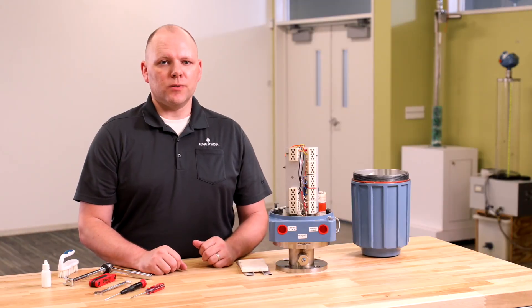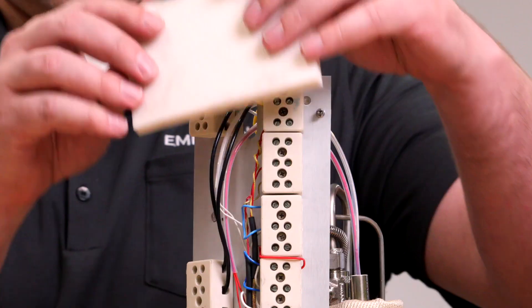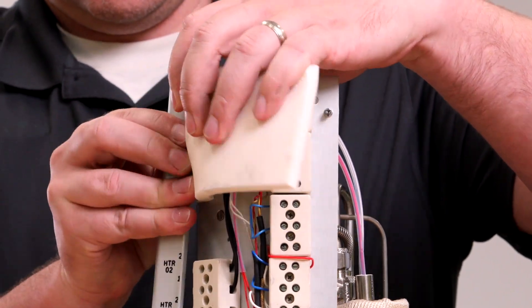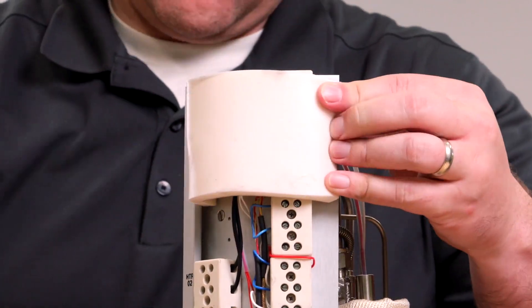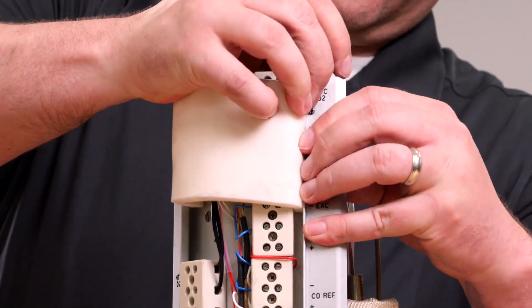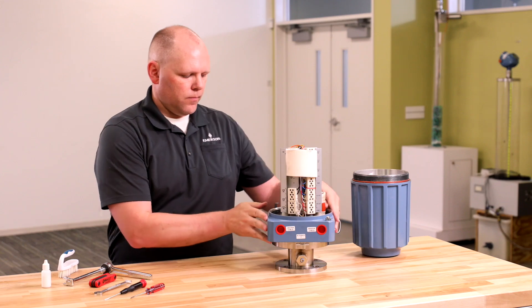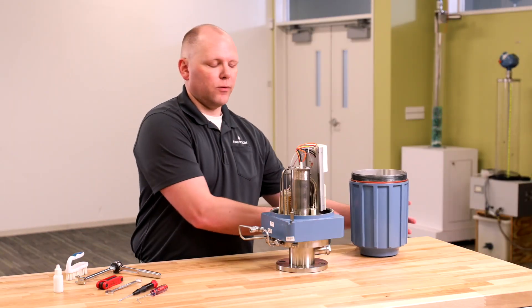Next, install the insulator and use the terminal marking plates to secure it in place. Reinstall the sensor cover, taking care to avoid cross-threading.